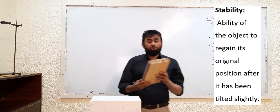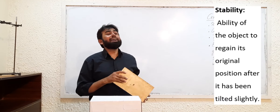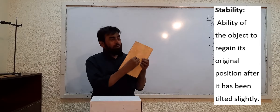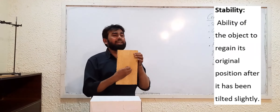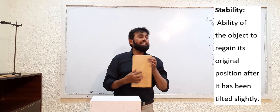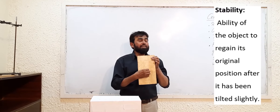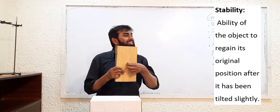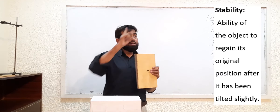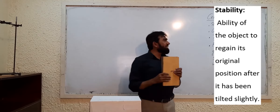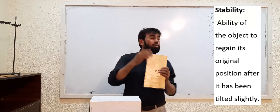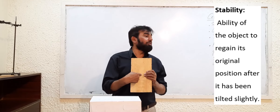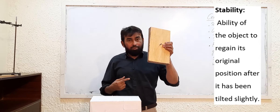Now I am talking about both height and base. I found the center of gravity of this object and I am going to explain how stability is related to the center of gravity. The stability depends upon the center of gravity, and I am going to explain how the height of the center of gravity affects the stability.